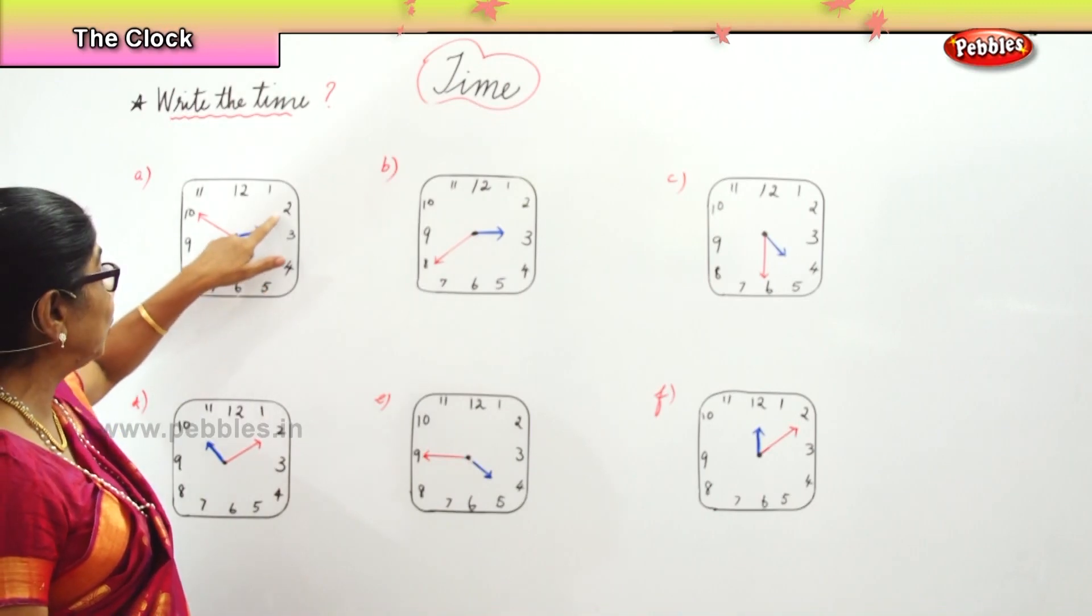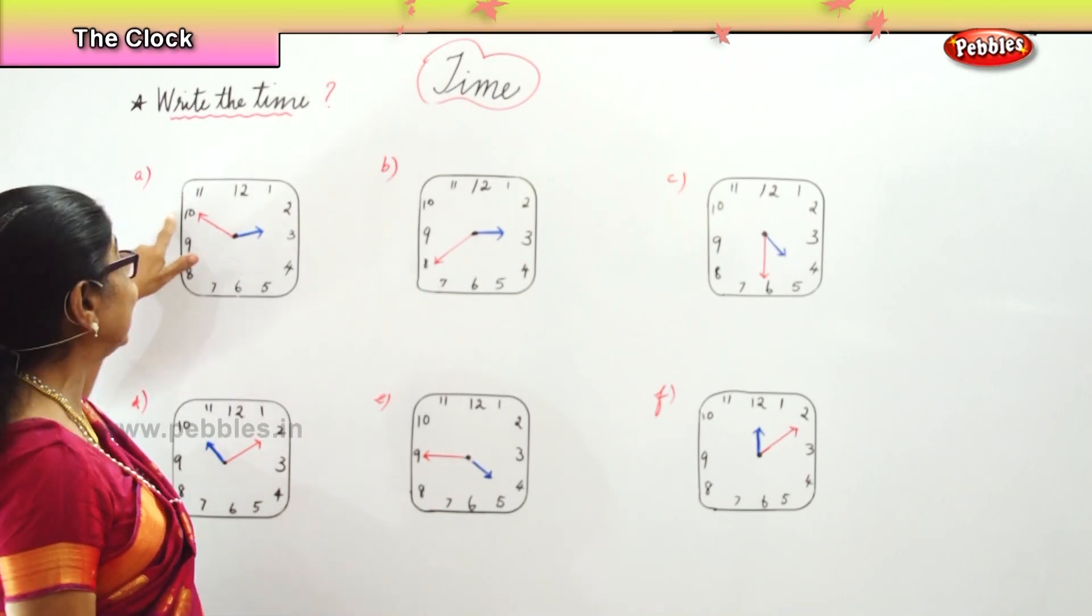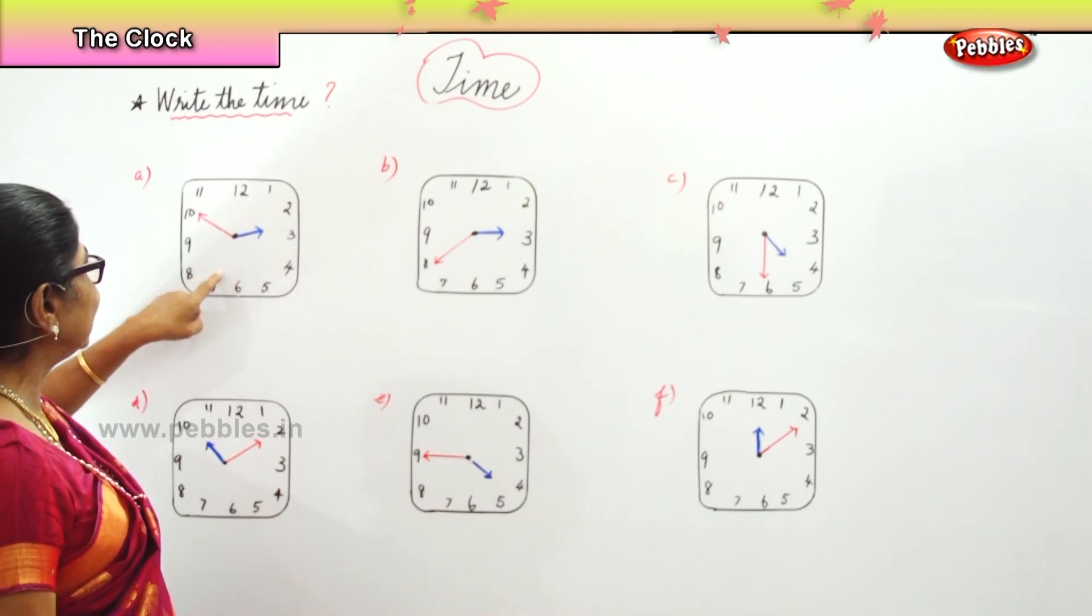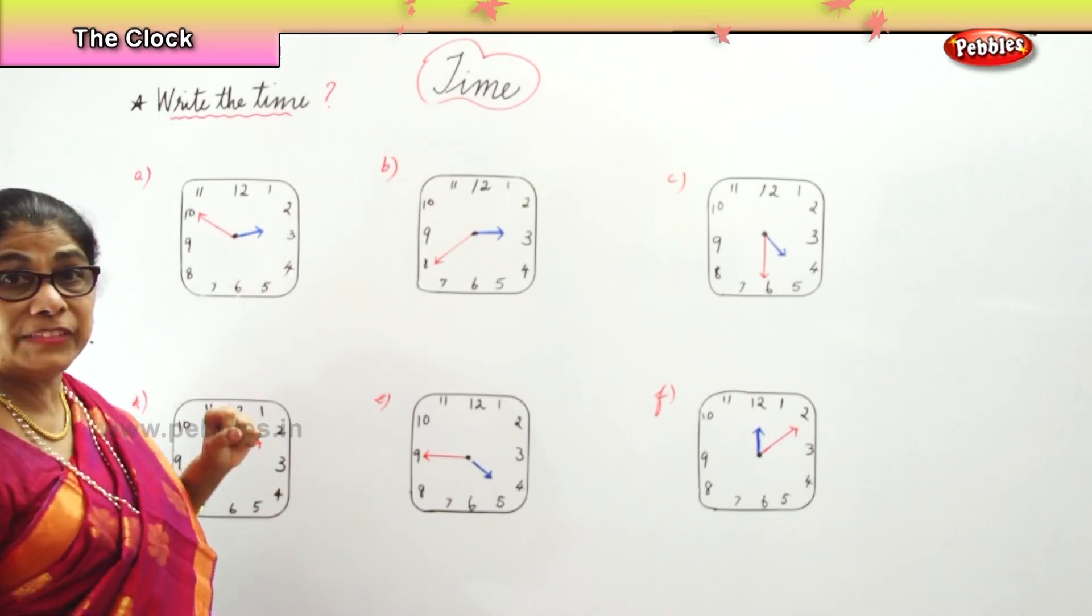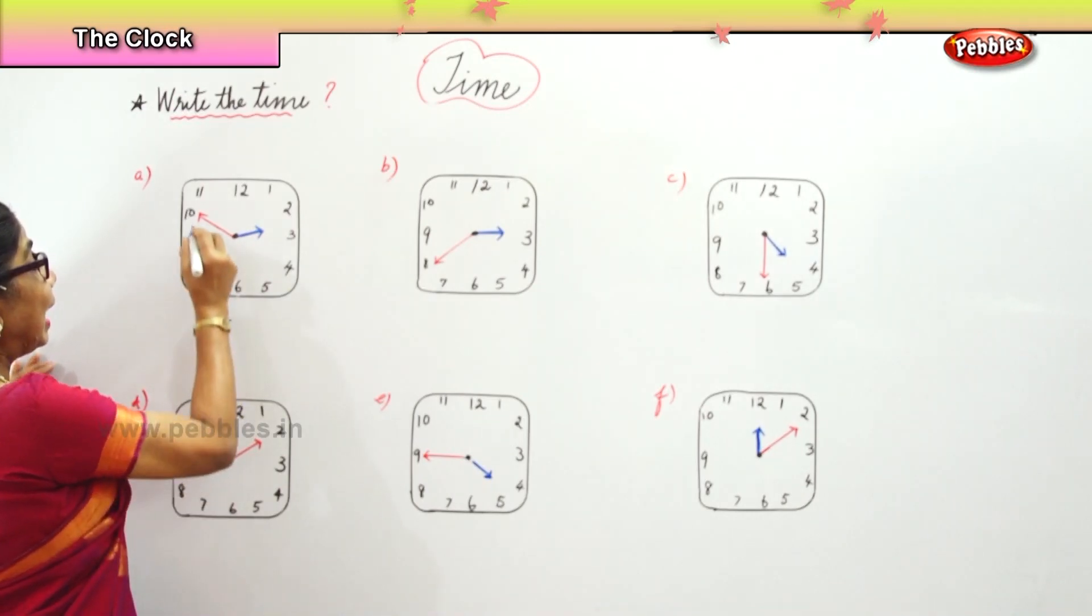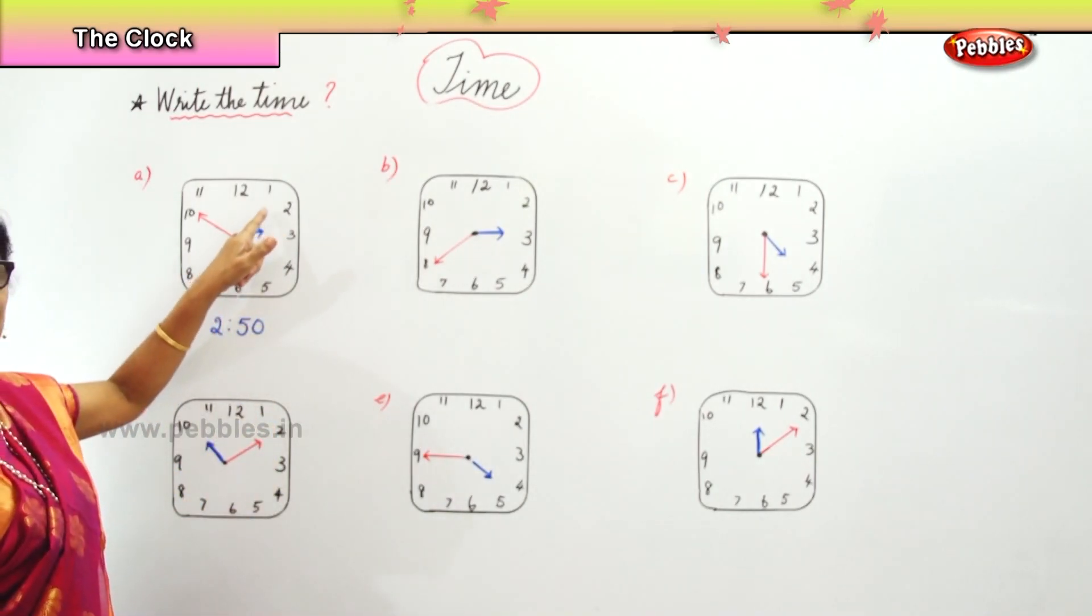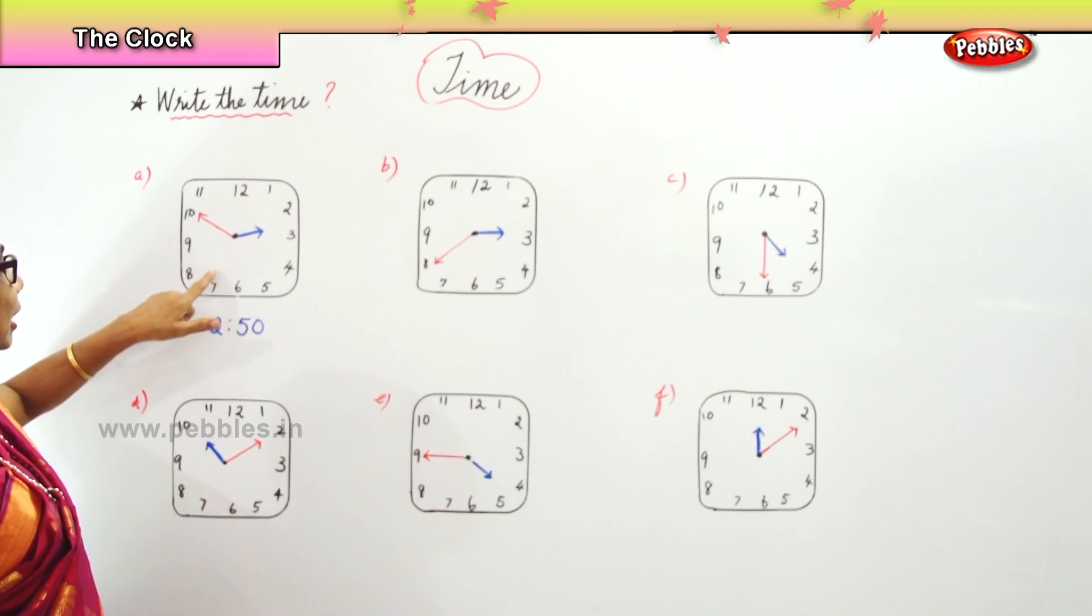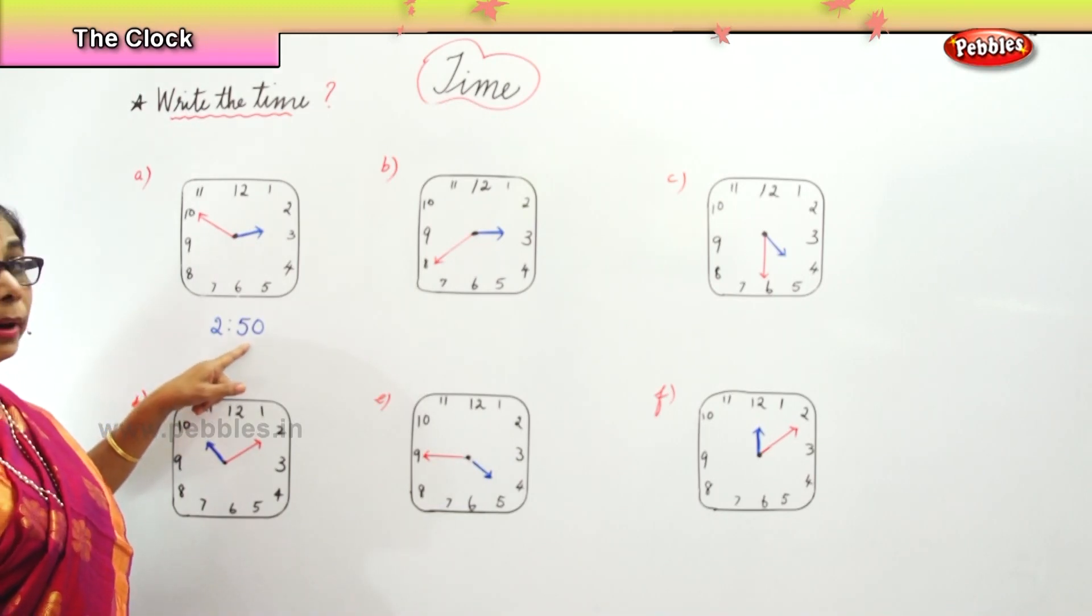The hour hand is between two and three, and the minute hand is at ten. That is five, ten, fifteen, twenty, twenty-five, thirty, thirty-five, forty, forty-five, fifty. So what time will you write it as? Two fifty. Two hours past and fifty minutes. Every number is five minutes: five, ten, fifteen, twenty, twenty-five, thirty, thirty-five, forty, forty-five. So two hours fifty minutes, or fifty minutes past two hours.